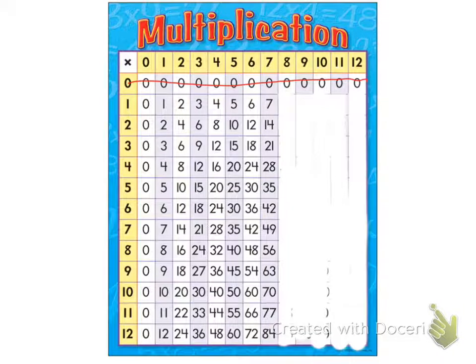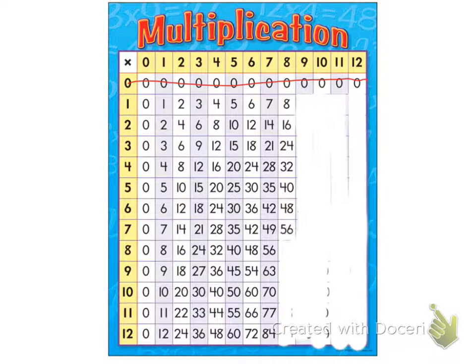What about the multiples of eight? Eight, sixteen, twenty-four, thirty-two, forty, forty-eight, fifty-six, sixty-four, seventy-two, eighty, eighty-eight, ninety-six.